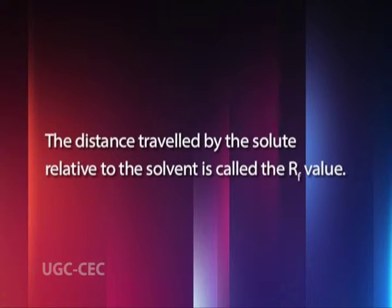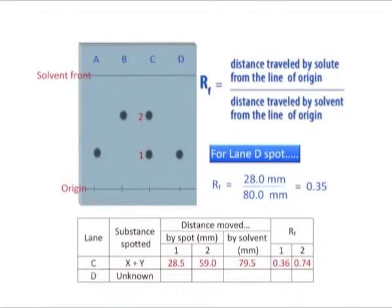Measure the distance travelled by each spot from the line of origin and calculate the RF value for each spot. The distance travelled by the solute relative to the solvent is called the RF value. Some compounds in a mixture travel almost as far as the solvent does, while others stay much closer to the baseline. RF value is calculated by the following formula: distance travelled by solute from the line of origin divided by distance travelled by solvent from the line of origin. The distance travelled by the spot is measured to the middle of the spot.